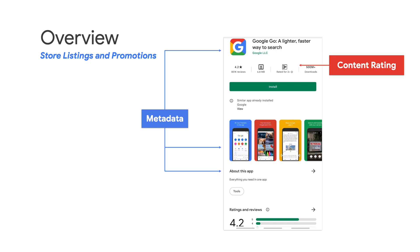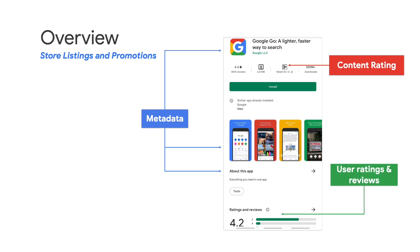Next, you will see the app's content rating, and this is also a very important element as users, especially the under-aged ones, can find out suitable content using this information. And finally, you will see user ratings and reviews, and a lot of users refer to this information before downloading the app. To ensure a pleasant user experience, this section should never be manipulated.